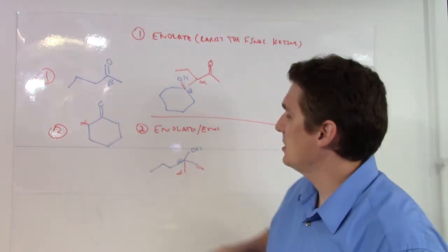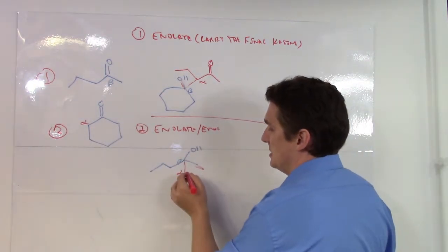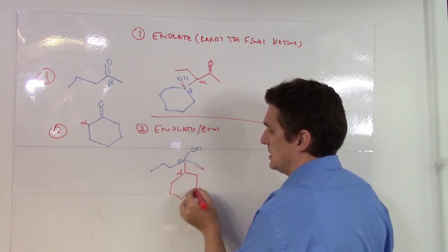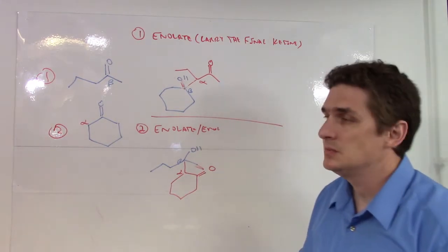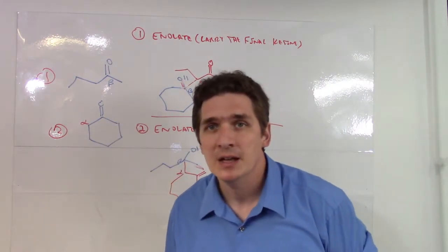In terms of this carbon, we need to draw everything that's attached to the alpha. So one, two, three, four, five, six. And we're going to have the ketone still be the ketone that was in here.